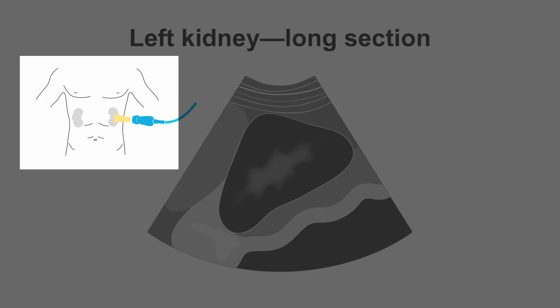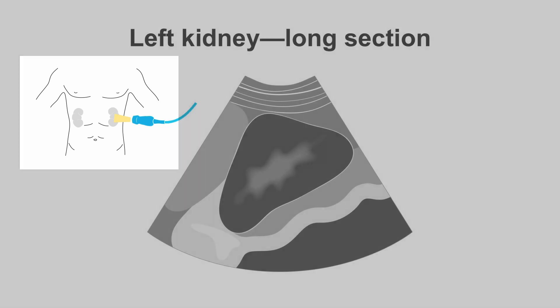To find the left kidney in long section, we will use a transcostal view over the left hypochondriac region.